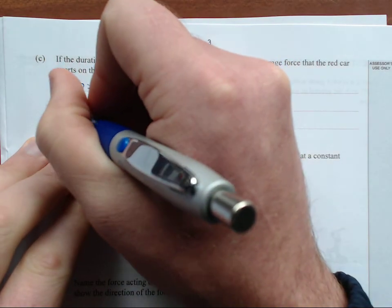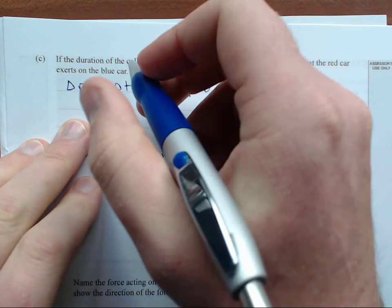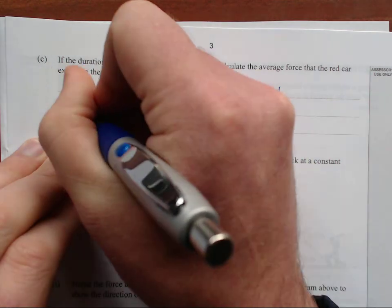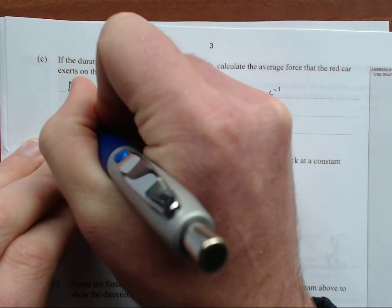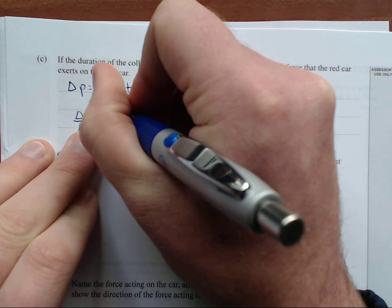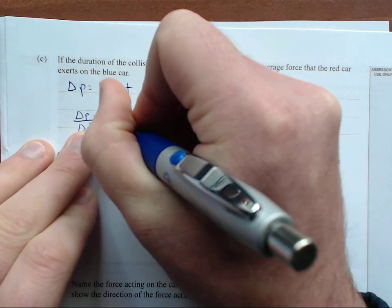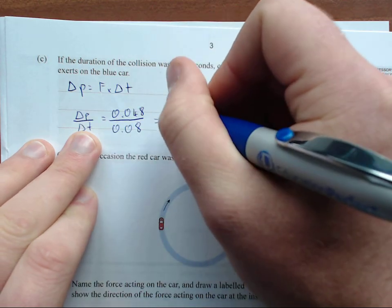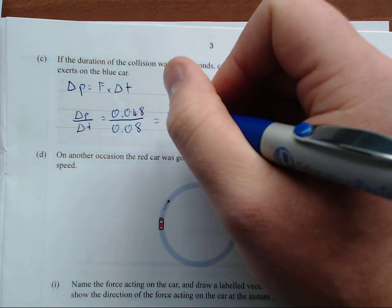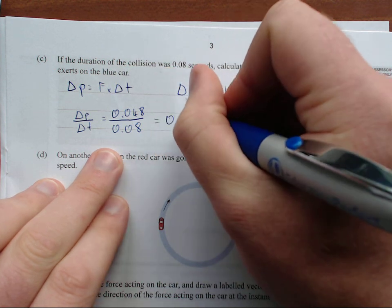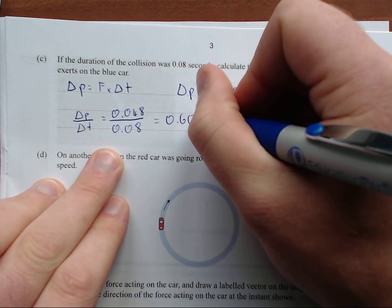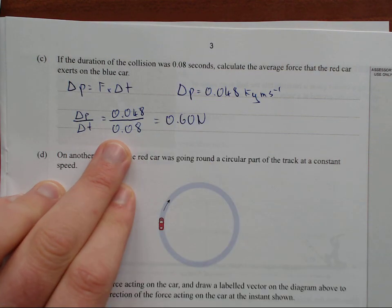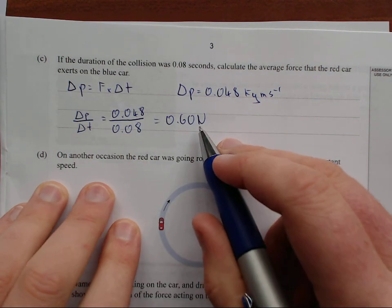So let's just do some rearranging to find force. So if I divide both sides by time, I'm going to get force just by itself. So change in P over change in time equals 0.048 divided by 0.08 equals 0.60 newtons. Notice that has to be two SF, two significant figures as the question before as well. Done.